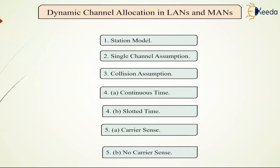The next assumption is slotted time. In this assumption, time is divided into discrete intervals, that is time slots. Frame transmissions always begin at the start of the slot. A slot may contain zero, one, or more frames corresponding to an idle slot, a successful transmission, or a collision.